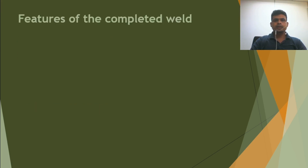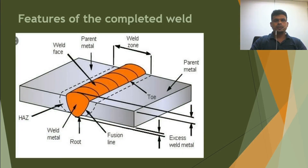Let's start today's lecture on features of the completed weld. Here you can see one picture — this is the completed butt weld. In this picture you can see the weld face, and this is the parent metal on both sides. This is the weld zone.